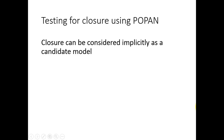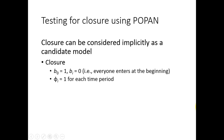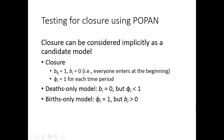The POPAN model can be fit with specific closure assumptions and included in the candidate set of models to test for closure. A closed model can be fit by fixing the recruitment parameter b to 0 and the survival parameter phi to 1. A death-only model can be fit by fixing the recruitment parameter b to 0 and allowing survival phi to be free. A birth-only model can be fit by fixing survival phi to 1 and allowing the recruitment parameter b to be free.